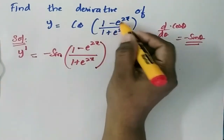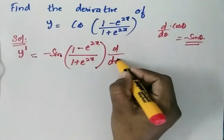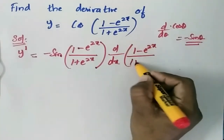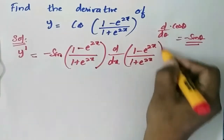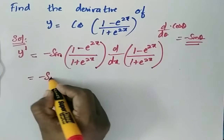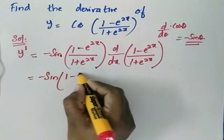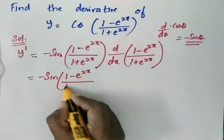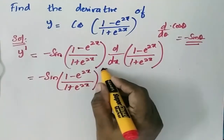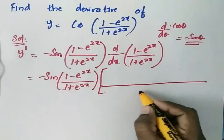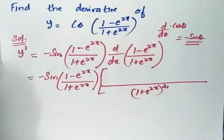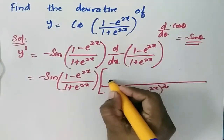Now we differentiate the inner expression. We apply d/dx of (1 - e^(2x)) / (1 + e^(2x)) using the quotient rule: -sin((1 - e^(2x)) / (1 + e^(2x))) multiplied by [1/(1 + e^(2x))^2], then differentiate the numerator.